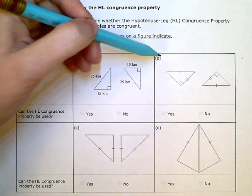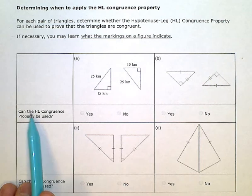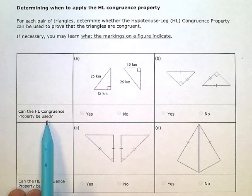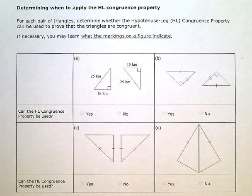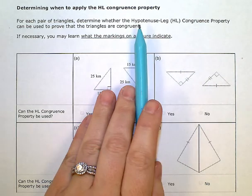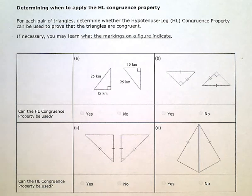We have four different pairs of triangles and I need to know if they are congruent — specifically, can the hypotenuse leg congruence property be used to show they're congruent? The hypotenuse leg congruence property says that if the hypotenuse of both triangles is congruent and one pair of corresponding legs is congruent, then the entire triangle is congruent. The third leg and all three pairs of corresponding angles will also be congruent. So it's a convenient congruence shortcut.